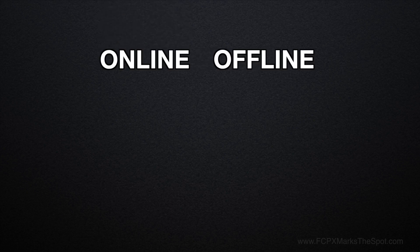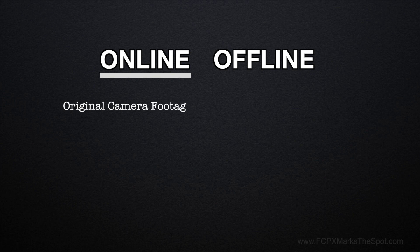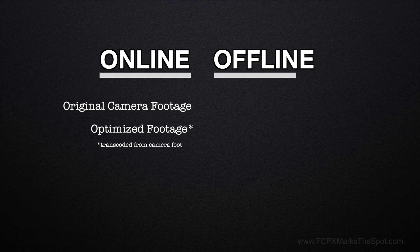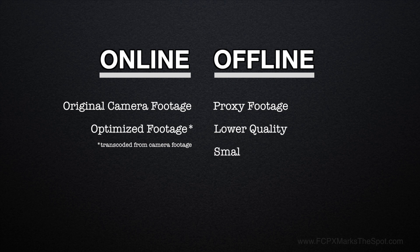Essentially there are two types of media. You have your online footage, which is your camera originals, or optimized media created from those camera originals, and your offline footage. This will be your proxy files — lower quality, smaller files that are easier to handle on most computers.